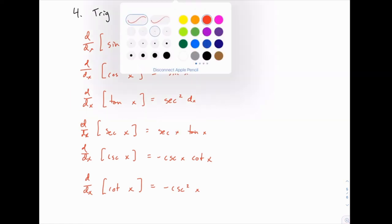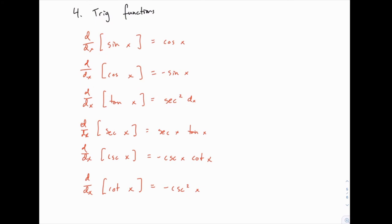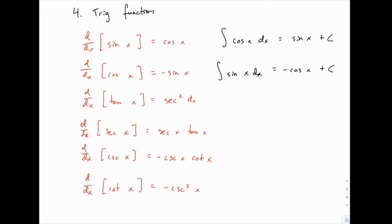For our purposes, we're focused on the antiderivatives, so we can just reverse all of these. The integral of cosine is sine of x plus c. The integral of sine — be careful here — is negative cosine of x plus c. Those two, just like with derivatives, require watching out for the negative sign. The integral of cosine is positive sine because the derivative of sine is positive cosine.